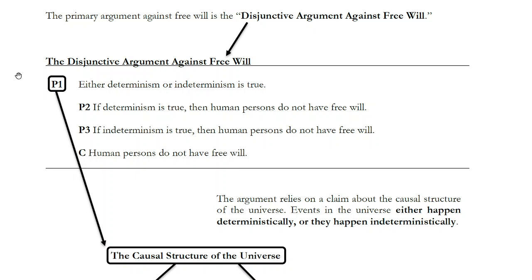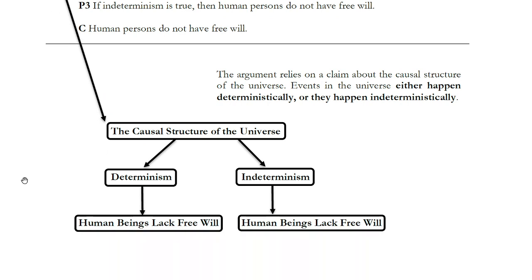In order to wrap our minds around this, I want to explore what determinism and indeterminism are about before we give a definition. Determinism and indeterminism are both claims about the causal structure of the universe. We all accept that there are relationships of cause and effect in the universe. The question is: what is the relationship between cause and effect? Determinism says that relationship is one way, and indeterminism says it is another way.